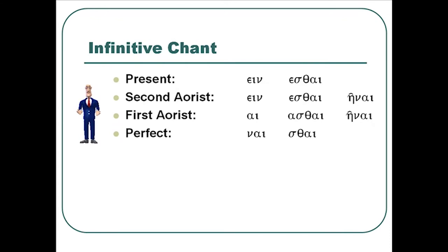Next is our enticing infinitive chant. We'll just learn the endings. We'll first do the present and then the second aorist, because those endings are similar to the present, then the first aorist, then the perfect. Notice the present and perfect have an active and middle-passive form — only two forms — while the two aorists have an active, middle, and separate passive form.